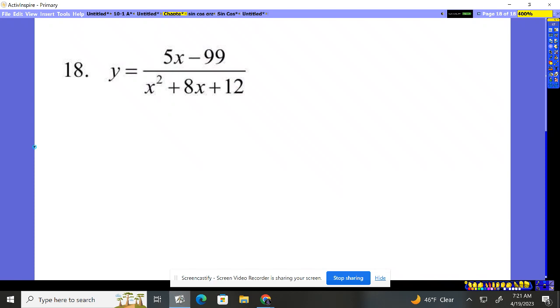Number 18, trying to find the vertical and the horizontal asymptotes. Let's do the horizontal first. That's what I always do first.